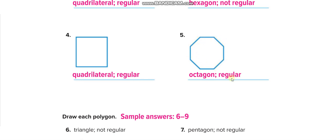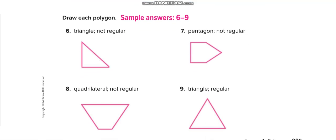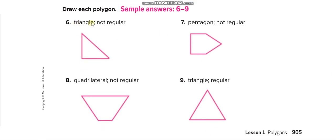Here they give you the names and you have to draw. For a not-regular triangle, draw one side longer than the other two. For a pentagon, draw five sides and make it not regular. For a not-regular quadrilateral, draw four sides of different lengths. For a regular triangle, draw three sides all of the same length, because they want a regular polygon.